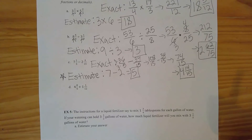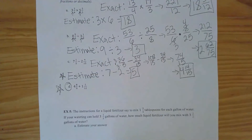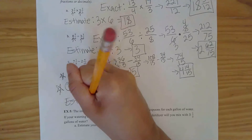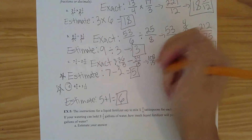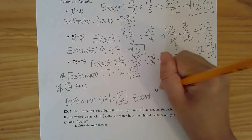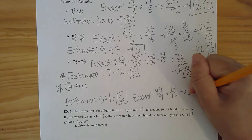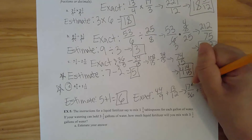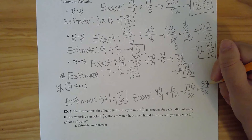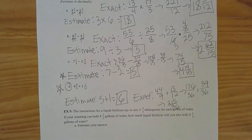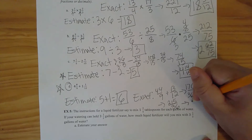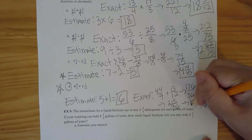Last practice problem, part d — try the whole thing yourselves. For the estimate, you should have 5 plus 1, which is 6. For the exact answer, you'll have 44 over 9 plus 39 over 12. The LCD is 36, giving 176 over 36 plus 39 over 36, which is 215 over 36. As a mixed number, this is 5 and 35 over 36, which is only one-thirty-sixth away from our estimate — pretty great.